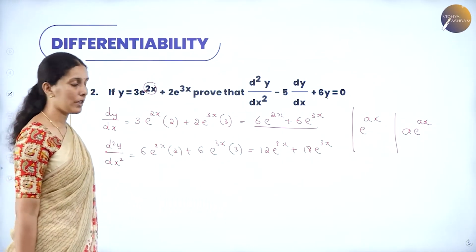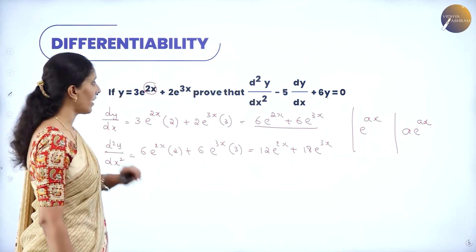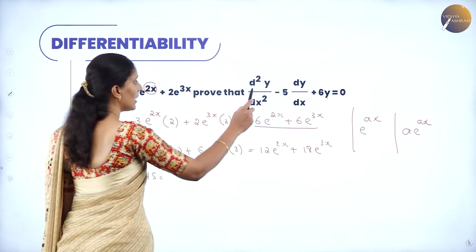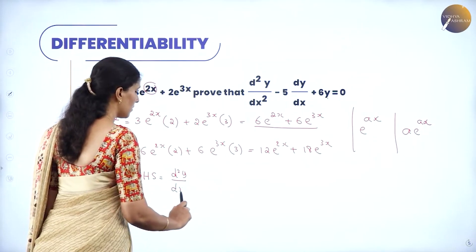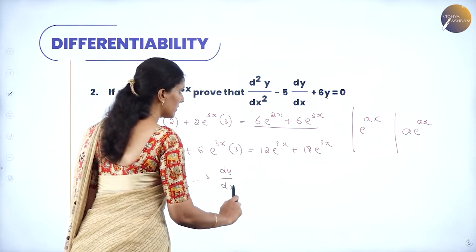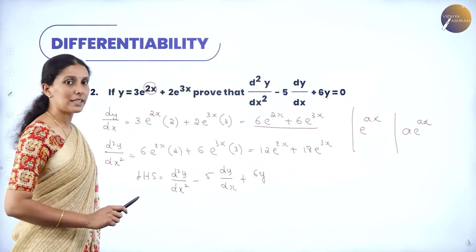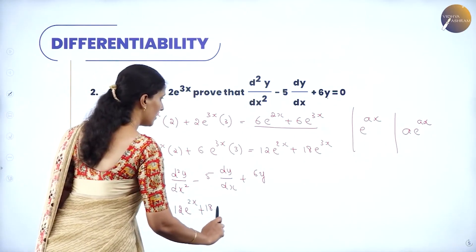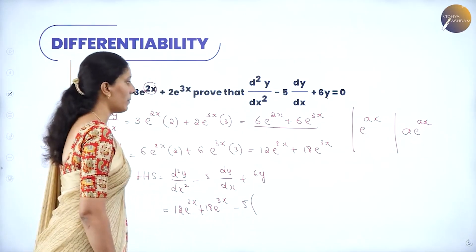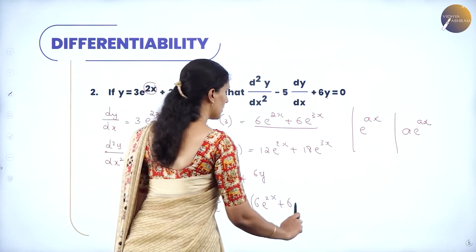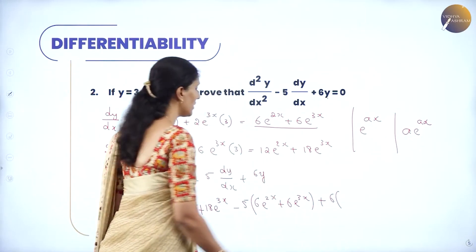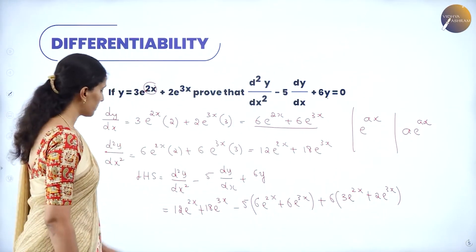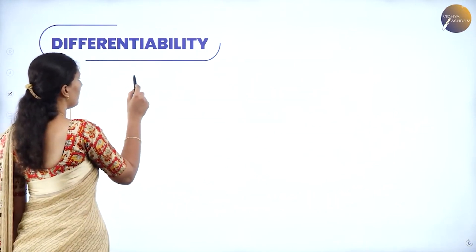Now we have d²y/dx², dy/dx, and y. Substitute into the equation. LHS = d²y/dx² − 5(dy/dx) + 6y. That is: (12e^(2x) + 18e^(3x)) − 5(6e^(2x) + 6e^(3x)) + 6(3e^(2x) + 2e^(3x)). Multiply out: 12e^(2x) + 18e^(3x) − 30e^(2x) − 30e^(3x) + 18e^(2x) + 12e^(3x).